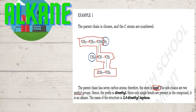Let's find the substituent. The substituent is a methyl group and since only single bonds are present in the compound, it is an alkane. The name is 3,4-dimethylheptane, since the methyl groups appear on the third and fourth carbon atoms. Take note that in writing the correct name, you use a comma and a dash, then dimethyl, with no space.